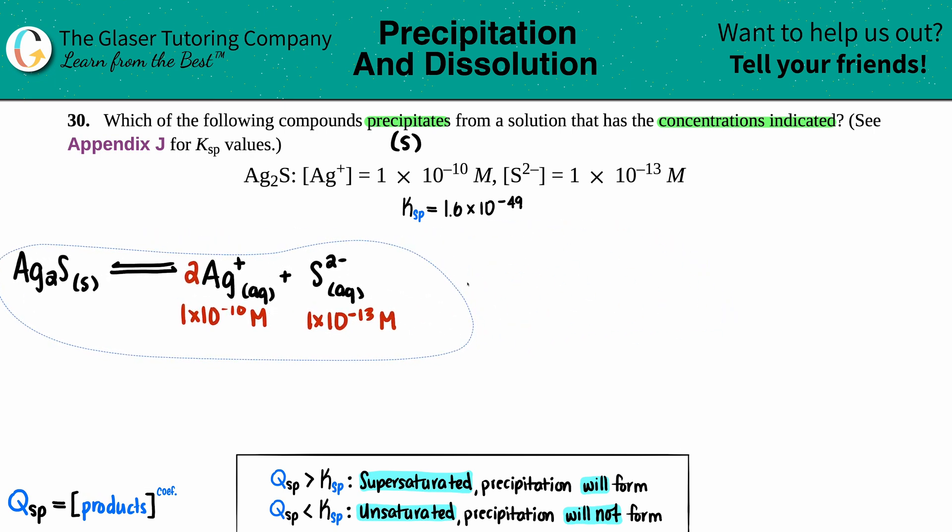Now I'm going to write the Qsp, which is the same equation as the Ksp. We're just now seeing where we're at. We don't know if we're at equilibrium, so we're just seeing what's up. Qsp equals the concentration of your two ions, so [Ag⁺] times [S²⁻], raised to the coefficients. We did have a 2 in front of the Ag, so I do have to raise the Ag to the second. But there was only one sulfur, so you could raise this to the first, but you don't have to.